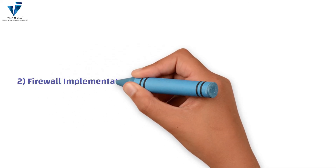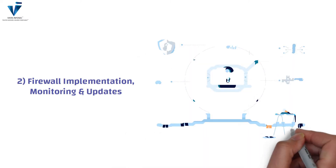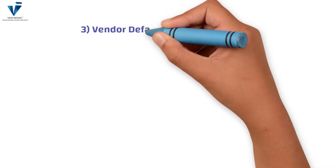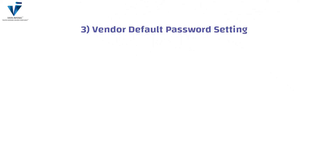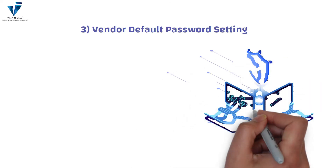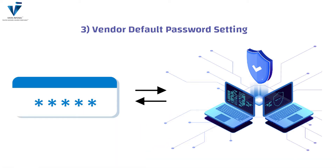The second checklist item is firewall implementation, monitoring, and updates. This includes organizations implementing and updating firewalls with the latest patches and ensuring the overall maintenance of the software. The third item is vendor default password settings. Organizations must have policies in place that ensure vendor default passwords are changed, and must maintain an inventory of all system components.